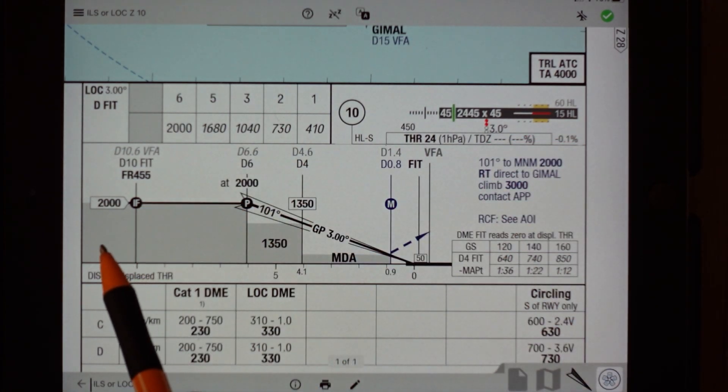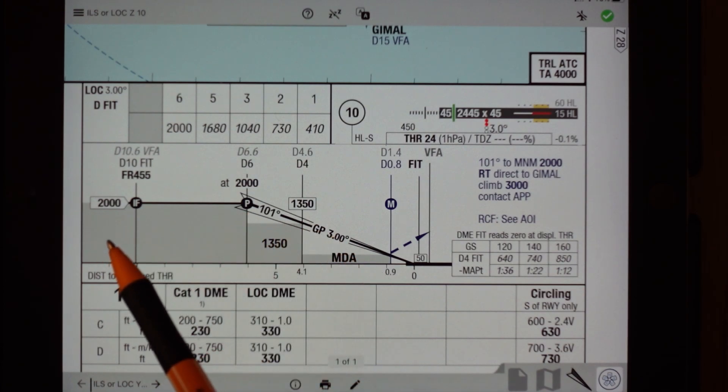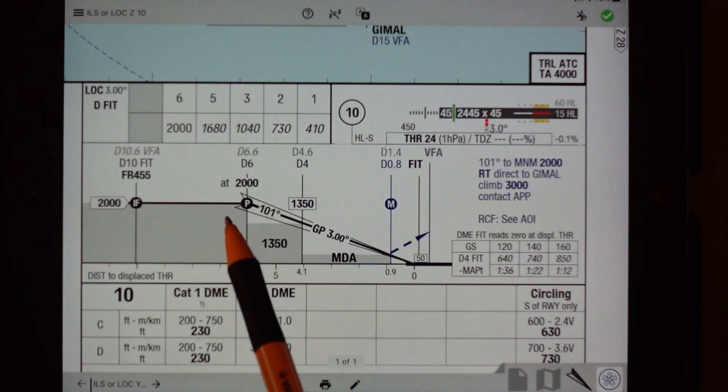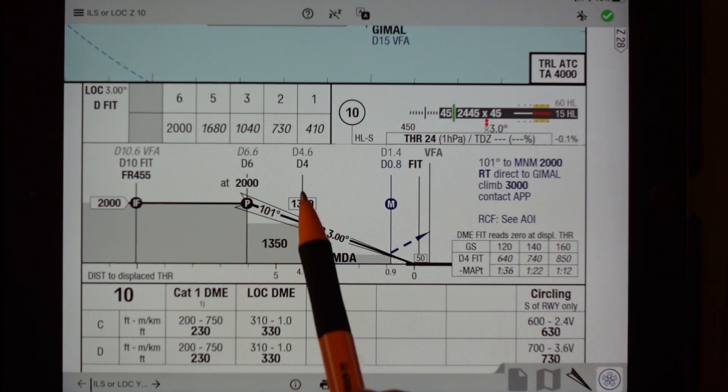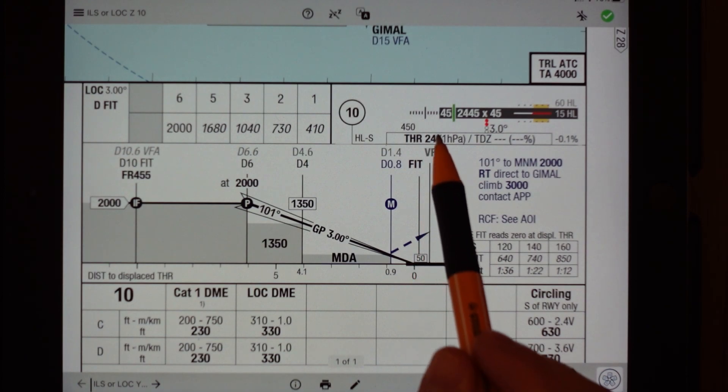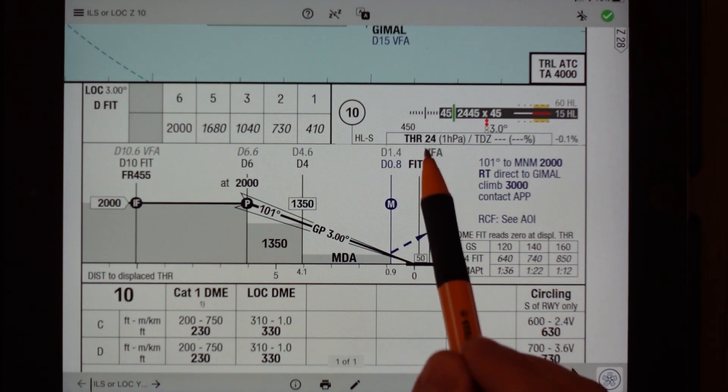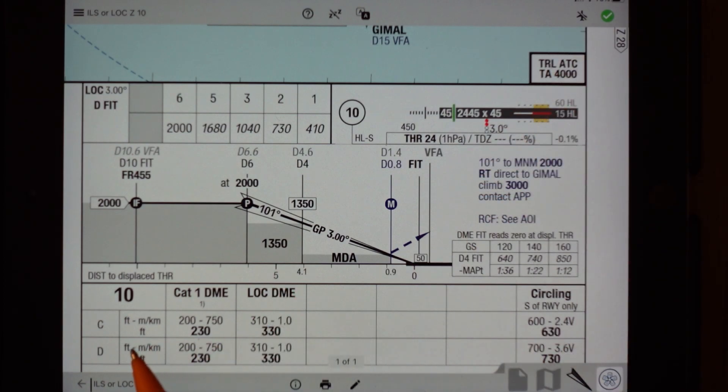So this is the side view of an ILS approach coming in, and you can see that it starts at 2000 feet, comes along, and then at six nautical miles, because we're talking horizontal distances, we start to go down. And at four nautical miles we've got to be 1350 feet, and then we keep going down, and then we get all the way to the threshold elevation which is at 24 feet.